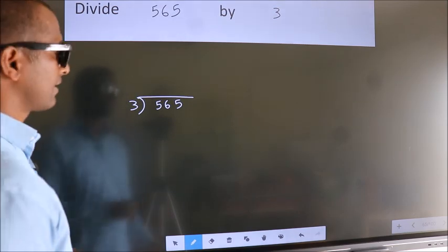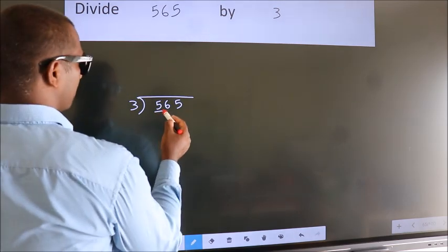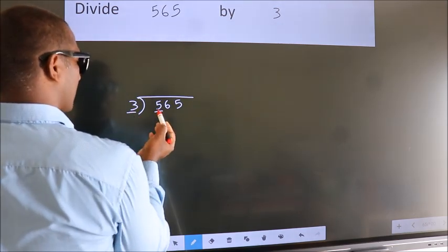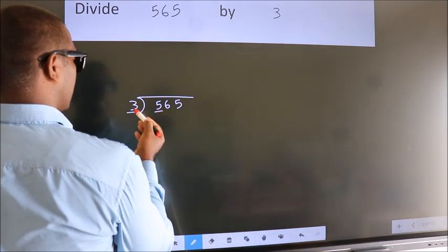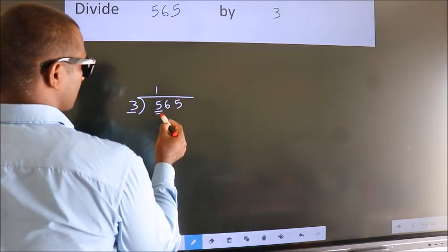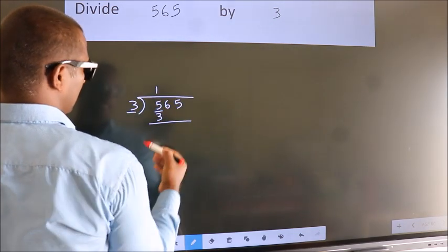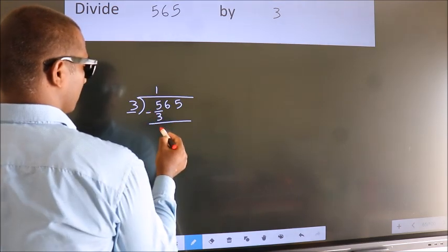Next, here we have 5, here 3. A number close to 5 in the 3 table is 3 times 1 equals 3. Now we subtract, we get 2.